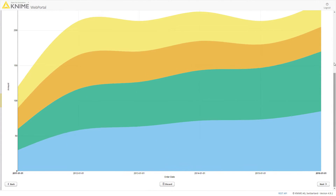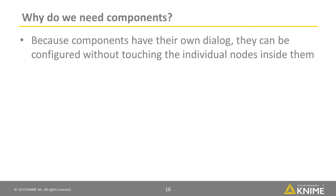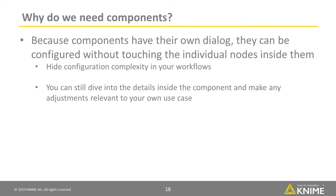Now let's go back to some of the things components are useful for. Because components have their own dialog, they can be configured without touching the individual nodes inside them, providing a handy way to hide configuration complexity in your KNIME workflows. Of course, if needed, you can still dive into the details inside the component and make any adjustments relevant to your own use case.